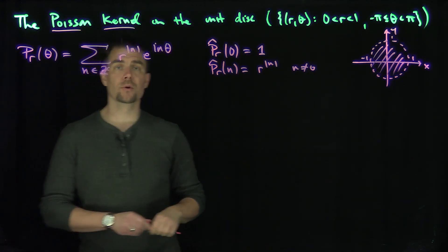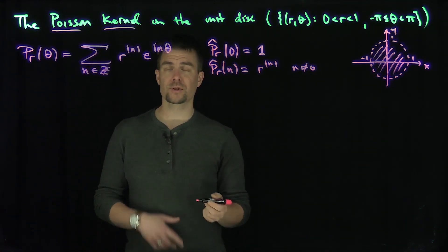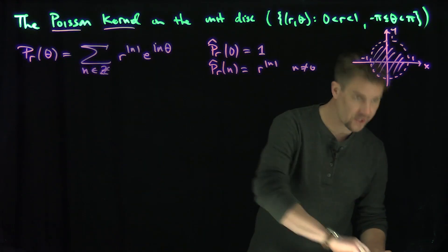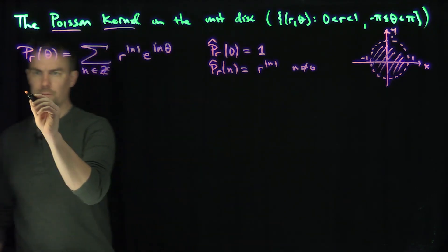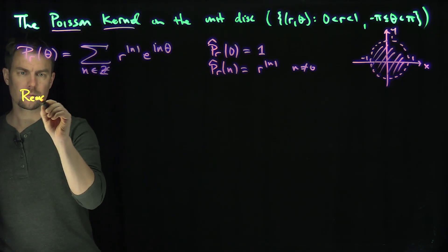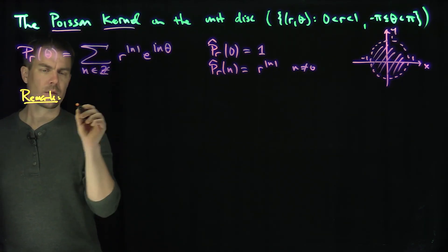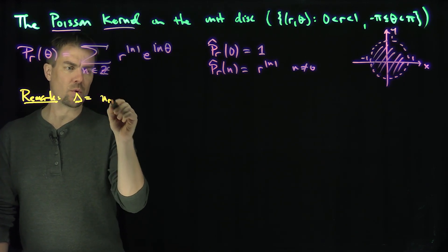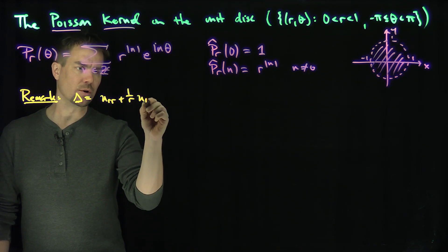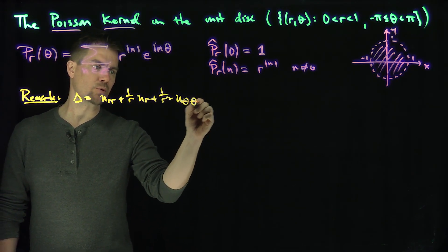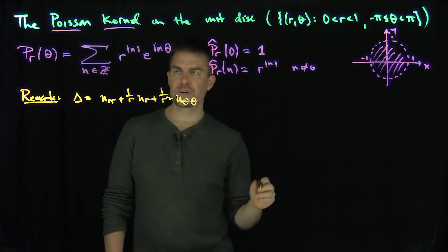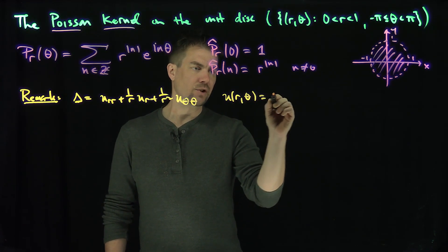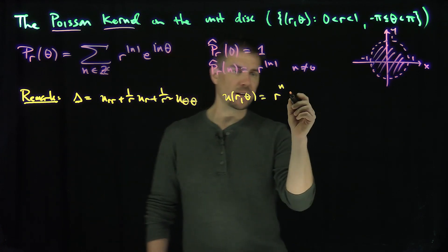Of course this is just two geometric progressions, so we can find an explicit formula for this Poisson kernel. But first I want to mention a remark: before we proceed, the Laplacian in polar coordinates is u_rr plus (1/r) u_r plus (1/r²) u_theta_theta, which we've proven in a previous video. So in particular, if I look at the functions u(r, theta) equals r^n e^{i n theta}...